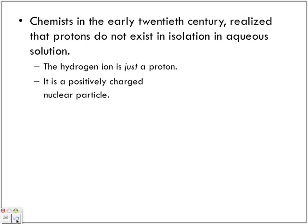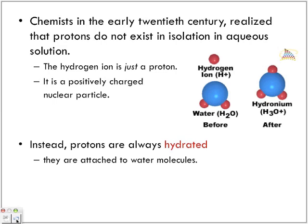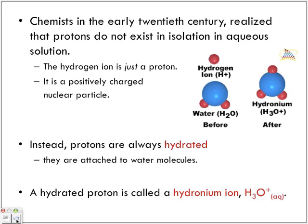What happens is it actually jumps on board with the water. Instead, protons are always considered hydrated. They are attached to water molecules. Here we have our one proton here, hydrogen. Here's the molecule water. It's going to combine itself with the H2O to form this compound called the hydronium ion, H3O+. Why is it positive one? Because we've just added a proton. So all of a sudden now this formula, that whole dissociation doesn't really work. Now we're going to not ignore it because we want to be able to distinguish between the two methods. A hydrated proton is called a hydronium ion, H3O+ in aqueous solution.